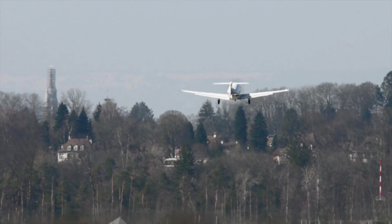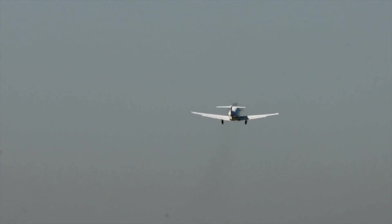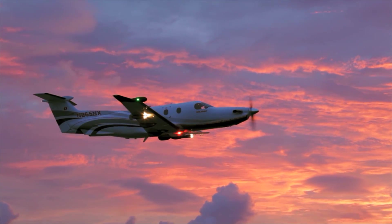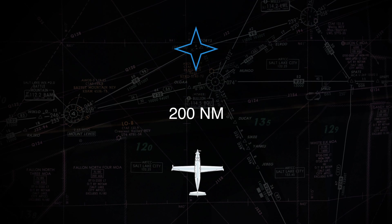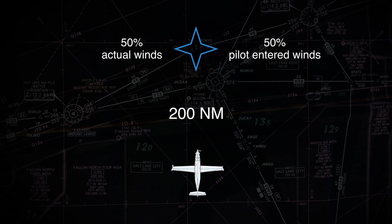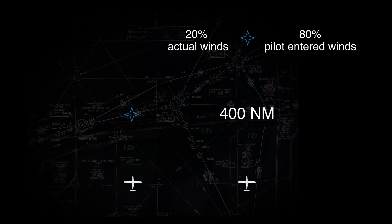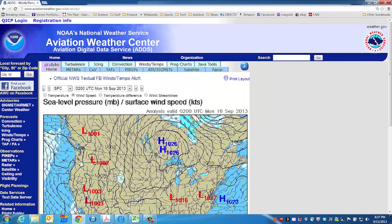Once airborne, the winds and temperatures used for FMS performance calculations are a blend of sensed and entered data. During flight, actual sensed wind and temperatures are used for the present position of the aircraft. However, for waypoints 200 miles ahead, the wind data is a blend of 50% actual winds and 50% pilot-entered winds. For waypoints 400 miles ahead, the wind data is a blend of 20% actual winds and 80% pilot-entered winds. For more accurate performance predictions, enter the forecast winds and temperatures aloft for several waypoints along your route of flight.